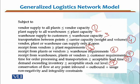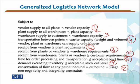The tenth constraint is conservation of flow: at any point, inbound should be equal to outbound plus usage. Beyond this, you also add non-negativity and integrality constraints — numbers must be integers where required, and all decision variables must be non-negative.